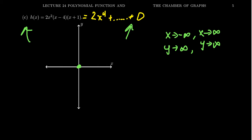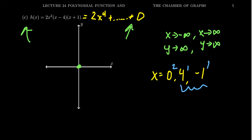Let's investigate the x-intercepts, the roots of the polynomial. x equals 0 is a root from the 2x squared. x minus 4 gives us a root of positive 4, and x plus 1 gives us a root of negative 1. Now focusing on multiplicities: we have a multiplicity of 2 at 0, 1 at 4, and 1 at negative 1. So 4 and negative 1 are odd multiplicities, which means the function will cross the x-axis at 4 and negative 1. At 0, it'll just touch the x-axis because we have an even multiplicity.